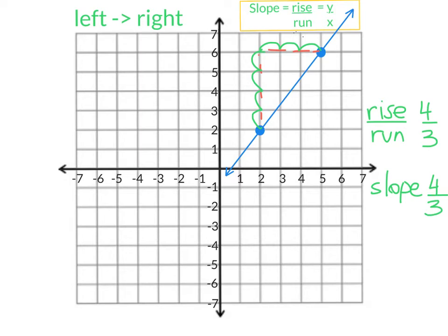The rise is always the amount you either go up or down from the first point, and the run is always the amount you go to the right.